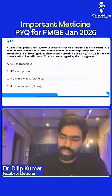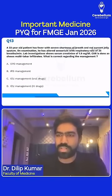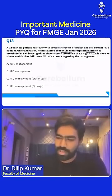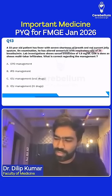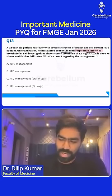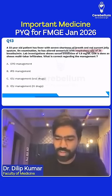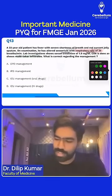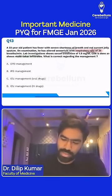A 20-year-old patient has fever, severe shortness of breath, and red current jelly stool. On examination, the patient has altered sensorium and a respiratory rate of 35. Lab results show creatinine of 1.9 — urea is not given. Chest X-ray shows multilobar infiltrates. The patient is also having altered sensorium.